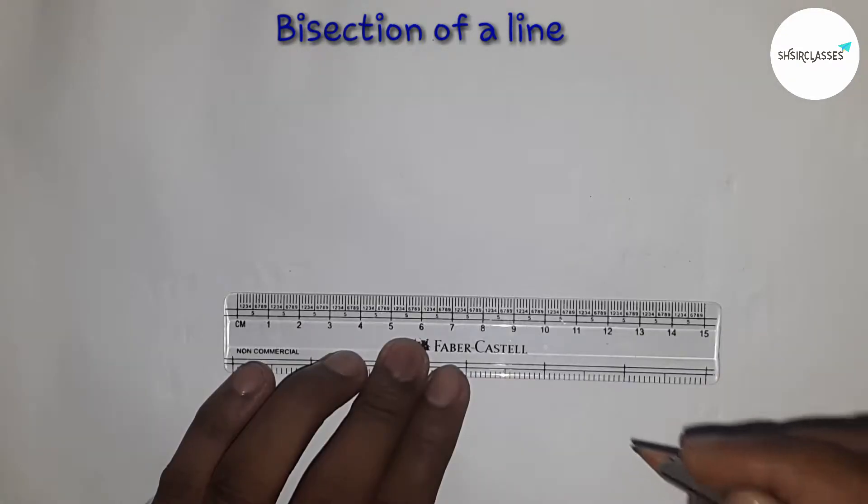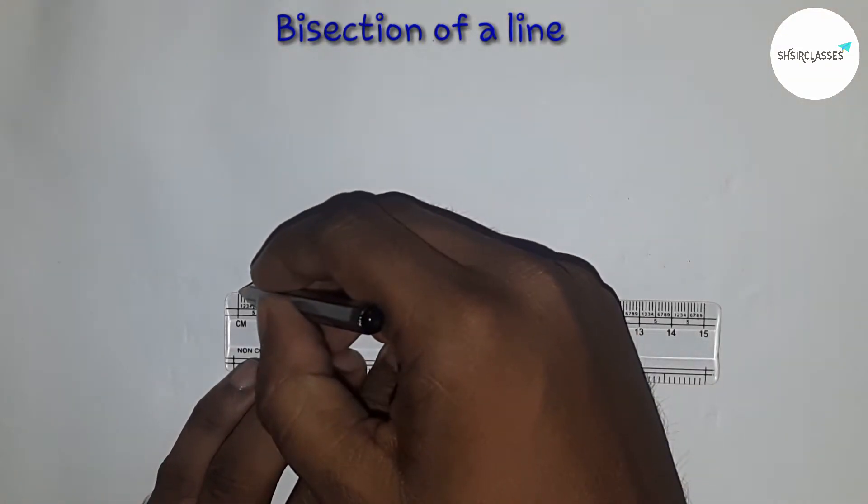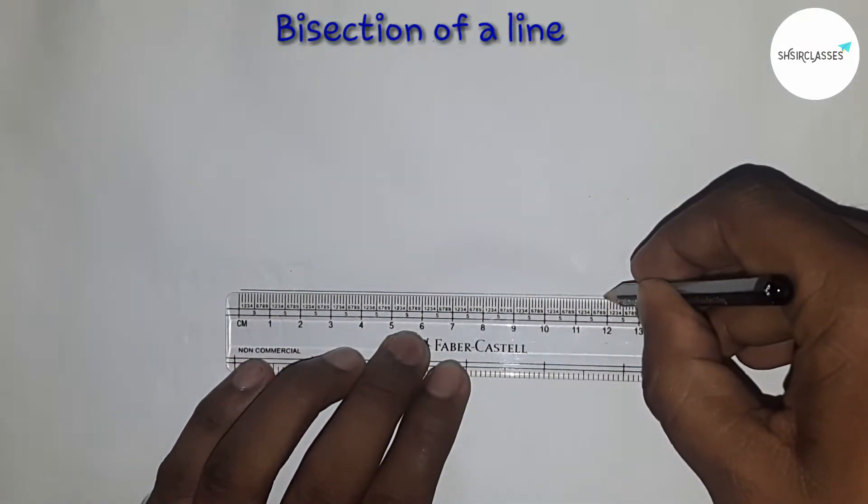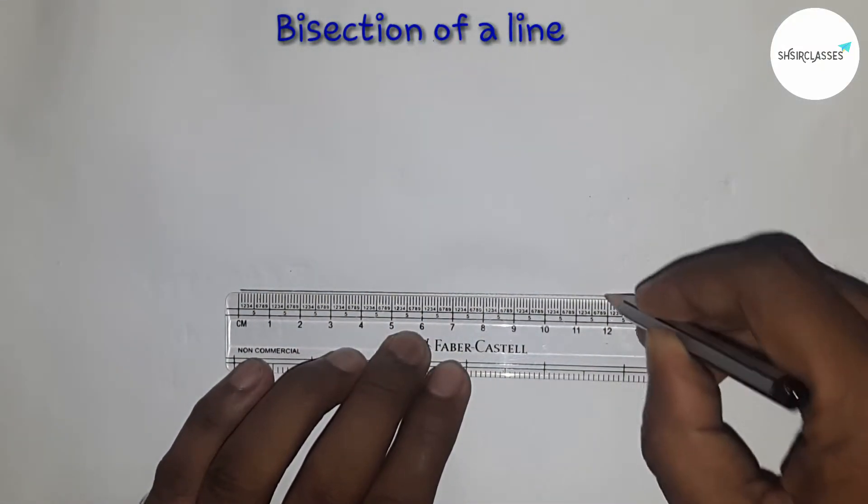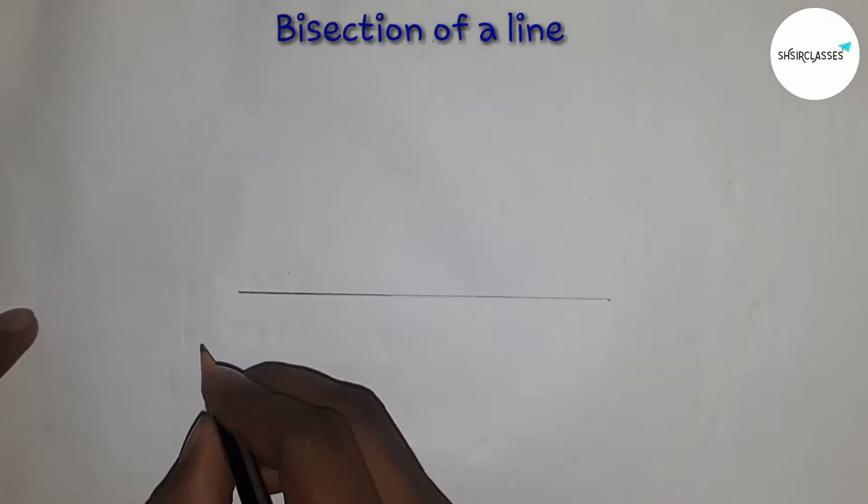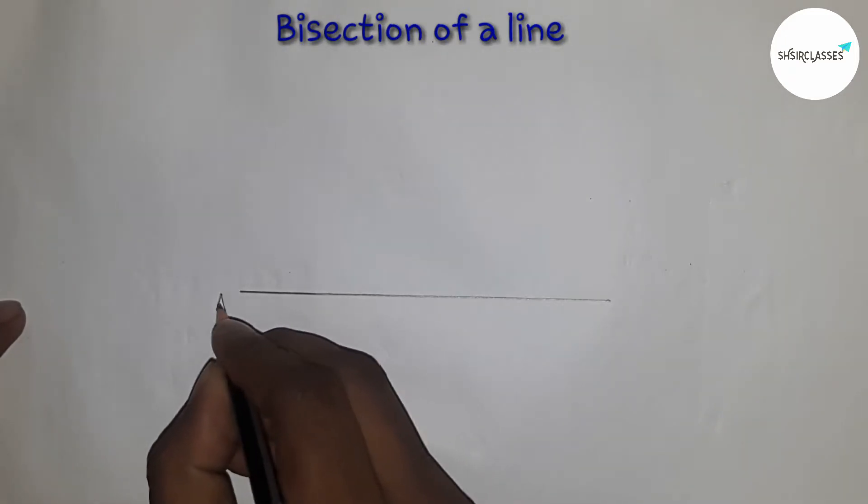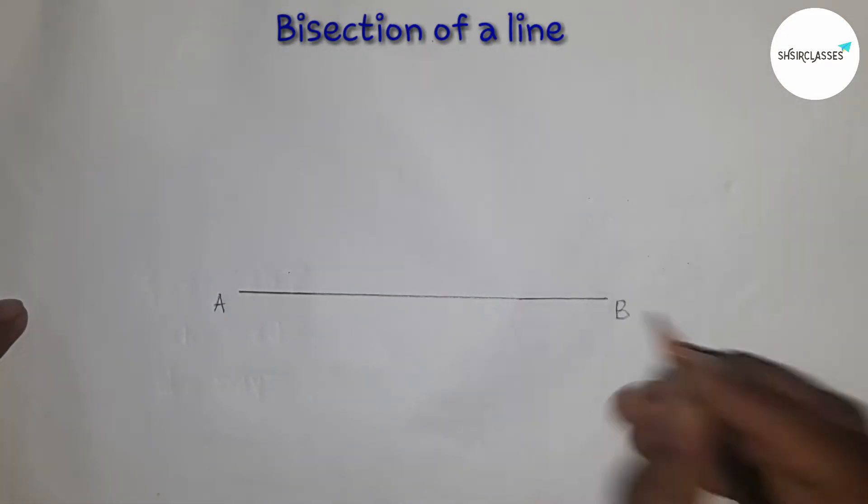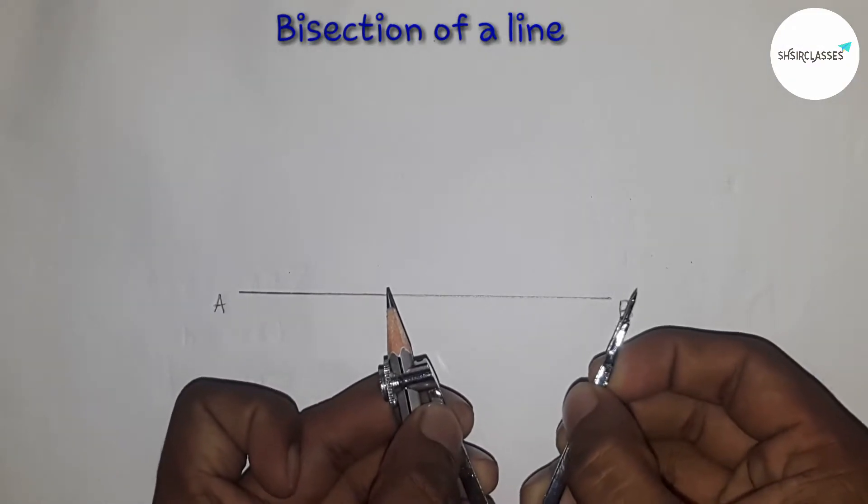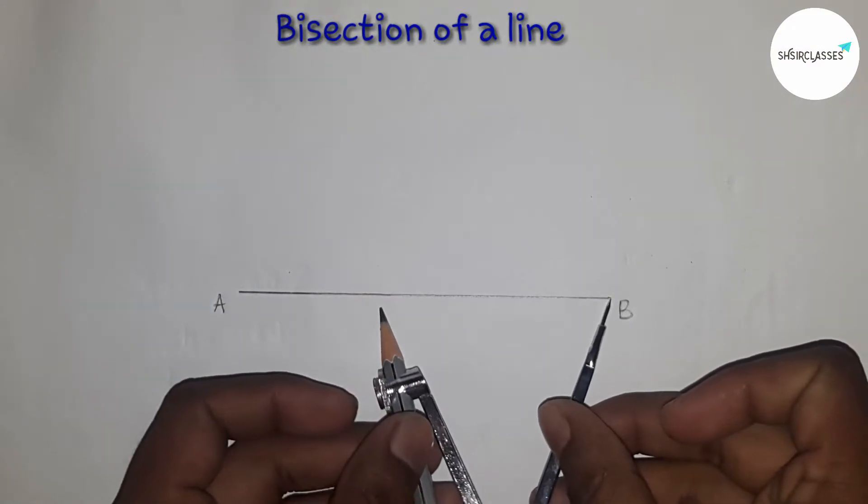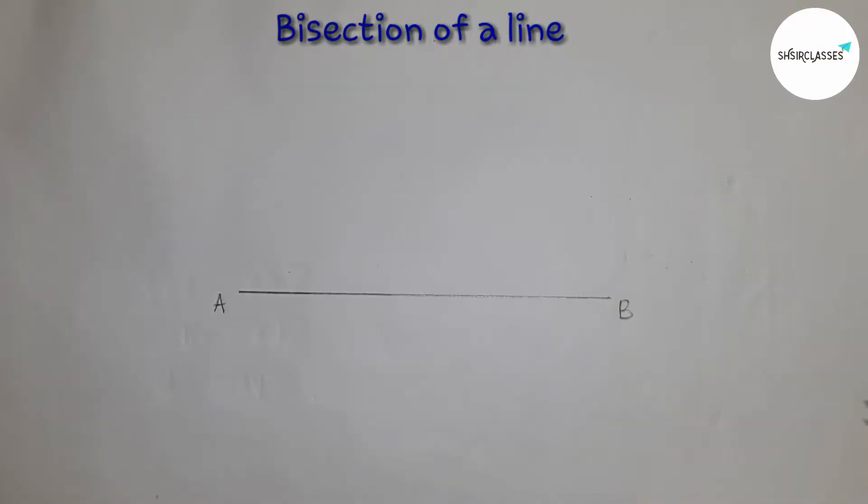First of all, I'm drawing a line of length 12 centimeters. Then I'm denoting it by AB. The line is AB. I am taking a pencil compass and measuring more than half.